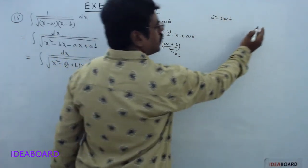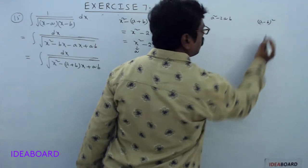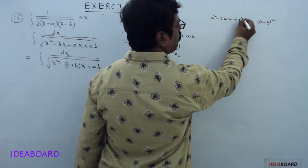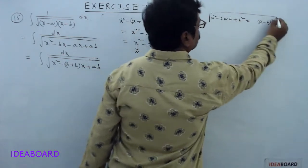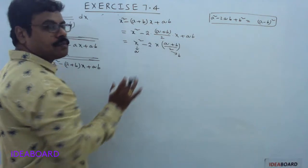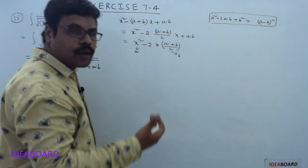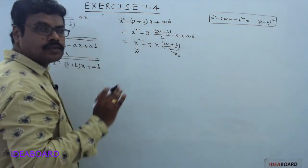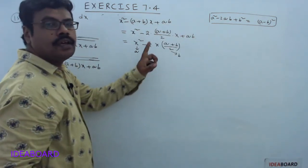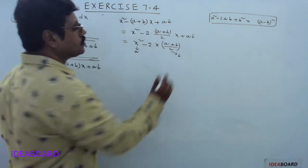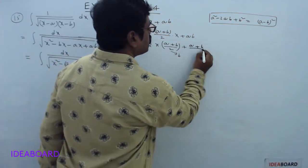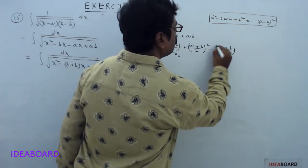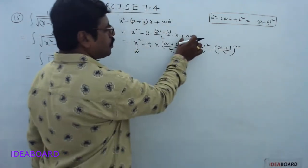To make this expression a perfect square like (a minus b)², we need one more term: plus b², which is plus (a+b)/2 whole square. So, adding and subtracting (a+b/2)²: we get x² minus 2·x·(a+b)/2 plus (a+b/2)² minus (a+b/2)² plus ab.